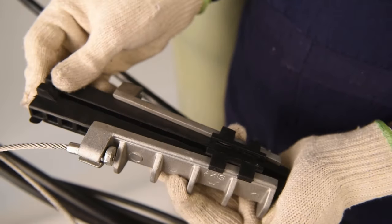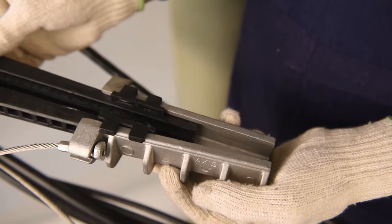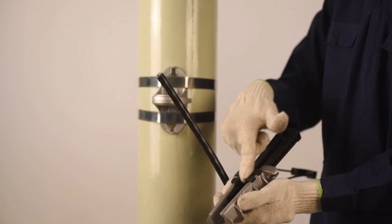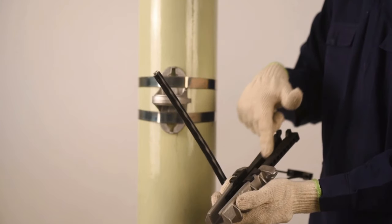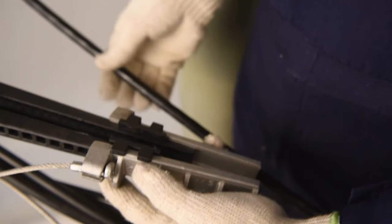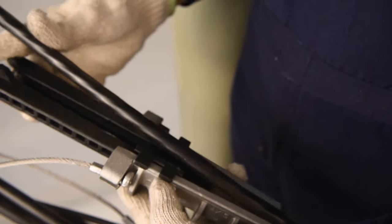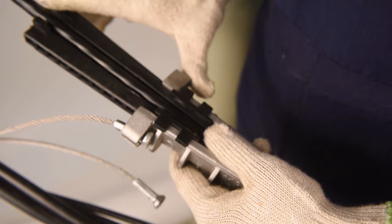Slide the captive wedges in clamp body to the top which allows sufficient gap for the cable to insert. Place the neutral messenger cable between the plastic wedges of the clamp body.